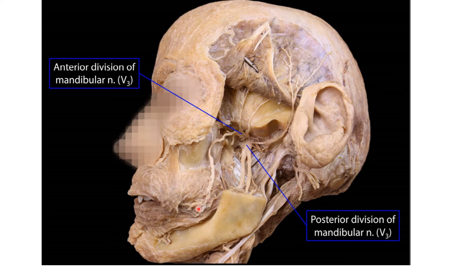The buccal nerve also supplies the mucous membrane of the cheek and the gum region of the lower jaw opposite the molars and premolars — this is the small sensory part supplied by the anterior division.